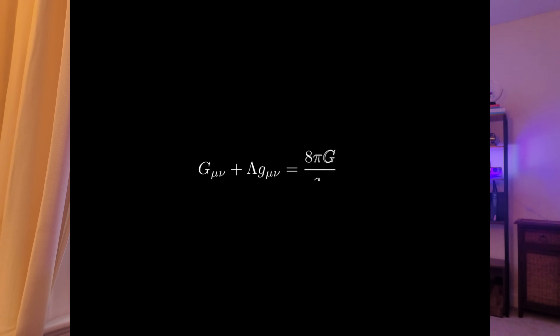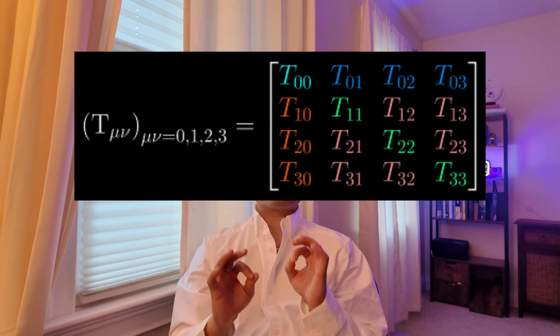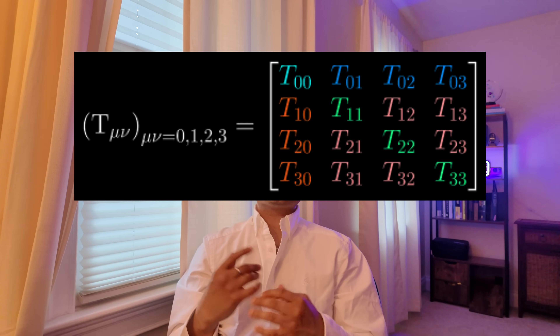which means it automatically respects energy and momentum conservation, which is awesome for any physical theory. Now jumping to the other side, T mu nu — this is the stress-energy tensor. It includes all the stuff in the universe: mass, energy, pressure, momentum, all in one neat 4x4 matrix. Basically, if you have stars, radiation, dark matter, and electric fields, they all show up here. And in the middle, you've got this constant factor — 8 pi G over c to the 4th — which makes sure that the units work out and links spacetime curvature to energy with the correct scale.